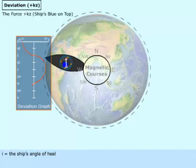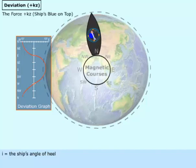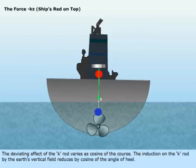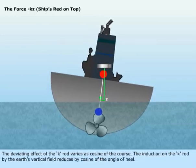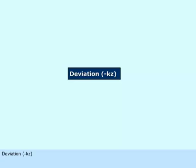I equals the ship's angle of heel. The effect of the K-rod is zero at the equator and maximum at the poles. The deviating effect of the K-rod varies as cosine of the course. The induction on the K-rod by the Earth's vertical field reduces by cosine of the angle of heel. I equals the ship's angle of heel. Deviation negative Kz.